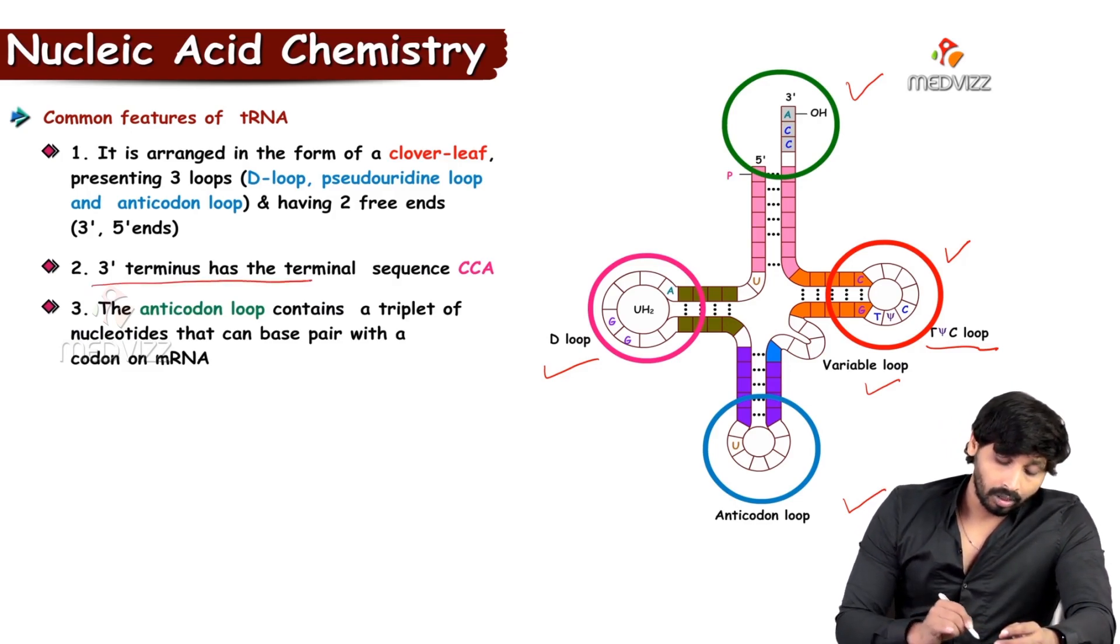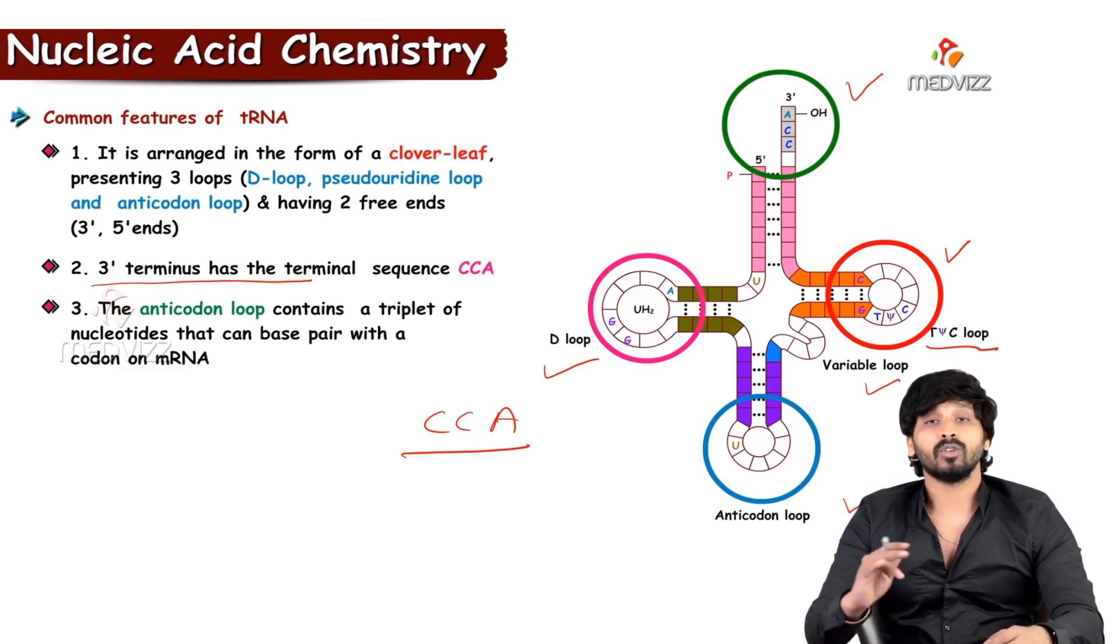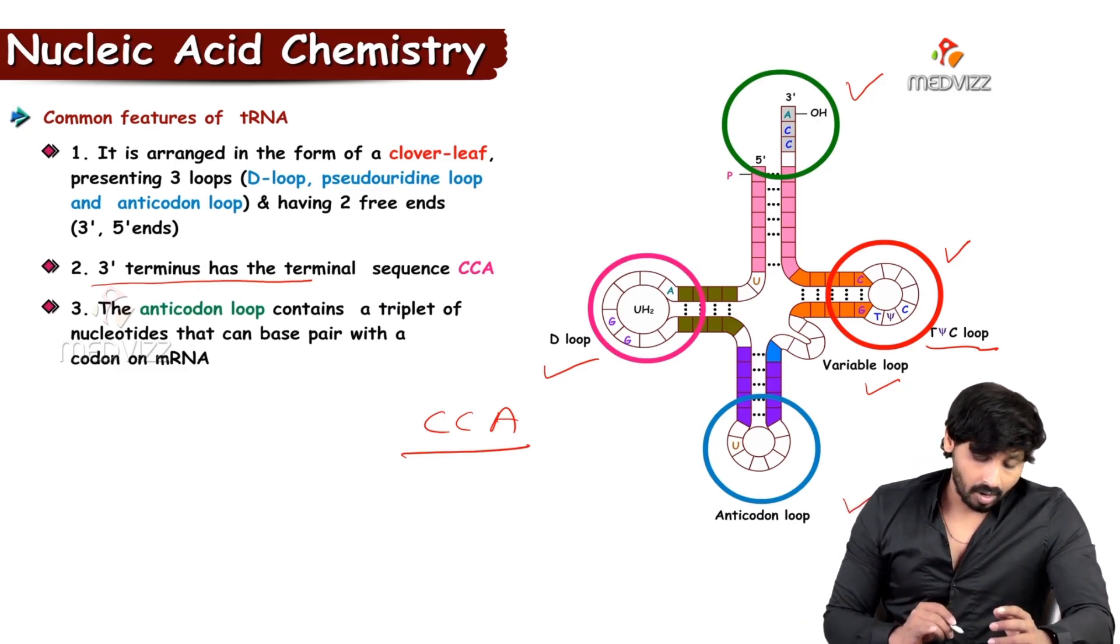The 3 prime terminus, what is the sequence? It is having a sequence CCA. This sequence is responsible for attachment of amino acid.